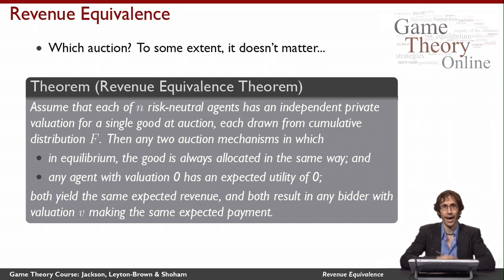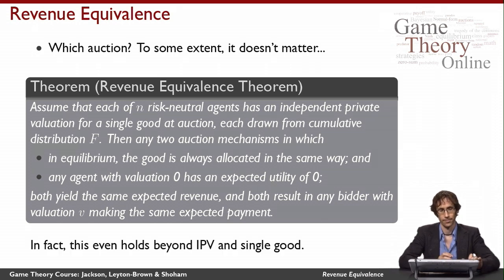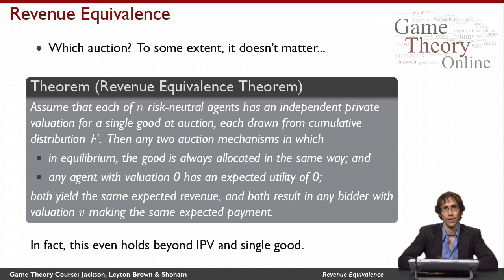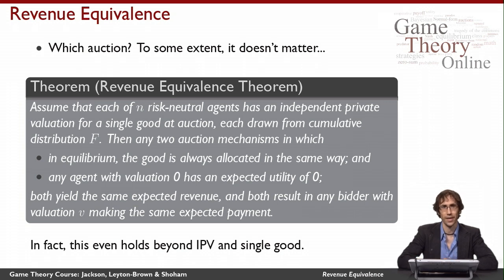then the rest of their payment functions have to be the same as well. You can't get extra money out of agents without changing the allocation function or the payment of the lowest valued agent. I've stated the revenue equivalence theorem in a way that's a bit narrower just to make it easier to explain. In fact, I can get beyond the independent private values assumption, and also beyond the single good assumption. Stating it in full generality would have been a bit more notationally clumsy, although the proof I'll give you actually holds more generally.